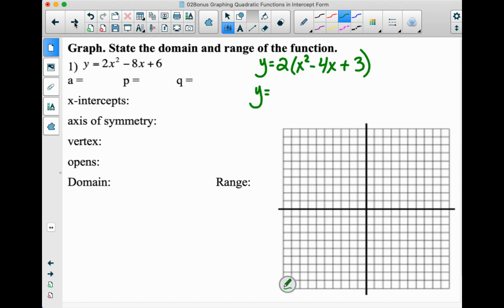And then we're looking for factors of 3 that can add up to negative 4. That would be negative 3 and negative 1. Believe it or not, we've done the hard work.